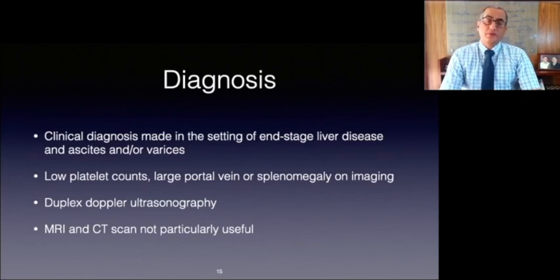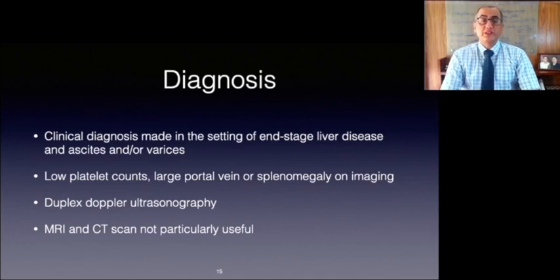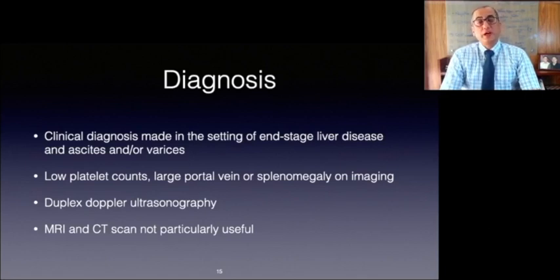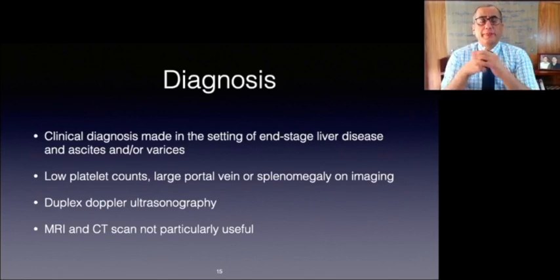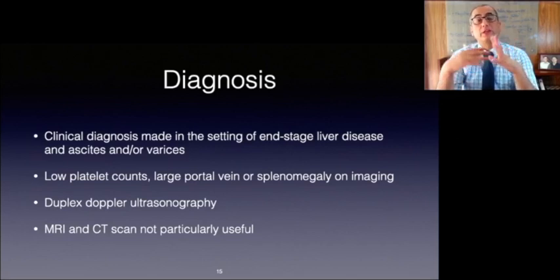Portal hypertension can be diagnosed in several ways. Clinical diagnosis can be made in the setting of end-stage liver disease and in the presence of ascites or varices. Subclinical portal hypertension is much more difficult to diagnose, but low platelet levels, a large portal vein, and splenic enlargement on imaging studies are suggestive. Direct or indirect measurements of the portal vein may be accomplished using wedged hepatic vein pressure or splenic pulp pressure, but these methods are relatively invasive. Imaging studies are helpful to make a diagnosis and define portal venous anatomy. Duplex Doppler ultrasonography is a non-invasive, low-cost method that provides sophisticated information, including direction and velocity of blood flow in the portal vein. Findings of increased hepatic echogenicity, splenomegaly, portal vein dilation, thrombotic occlusion, collaterals, and gallbladder wall thickening are indicative of portal hypertension.